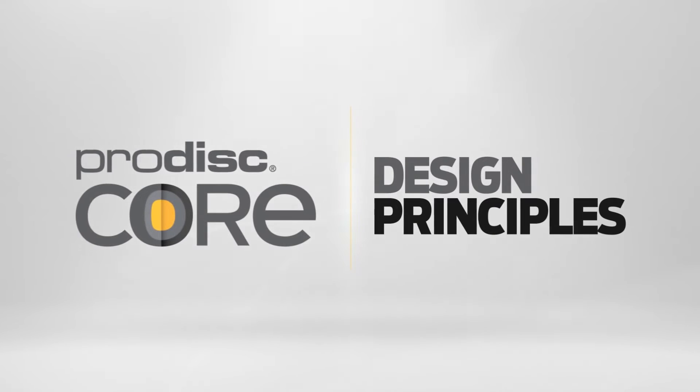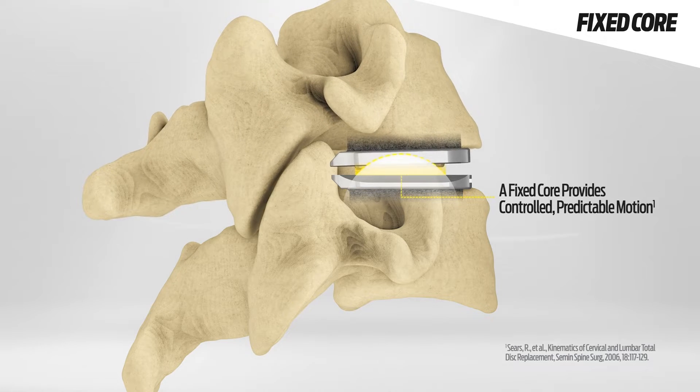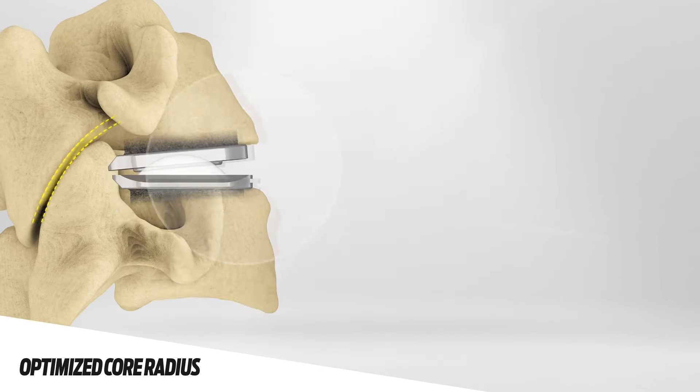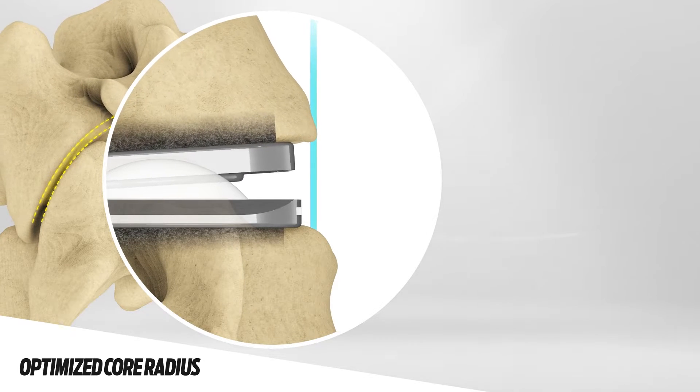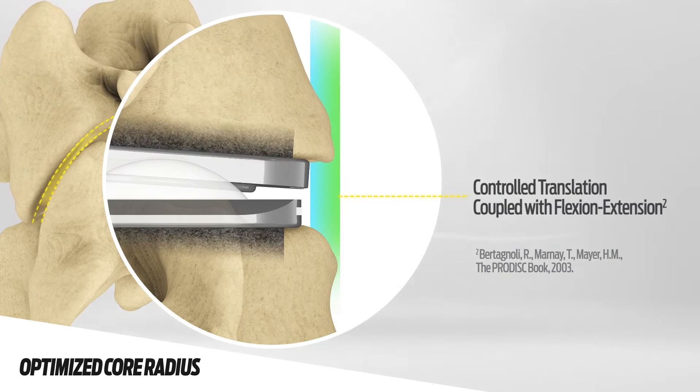ProDisc C Core features a combination of two critical design principles: a fixed core that provides stable, predictable motion while resisting shear forces, and an optimized core radius, specifically designed to provide controlled translation coupled with flexion extension.